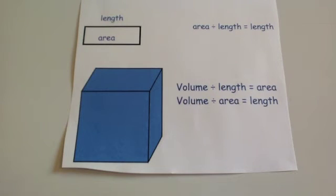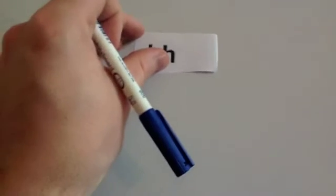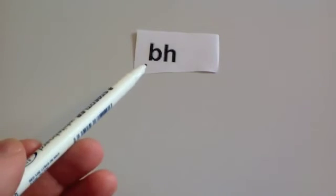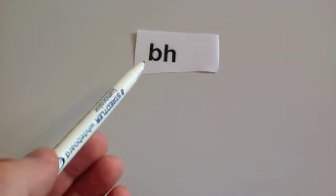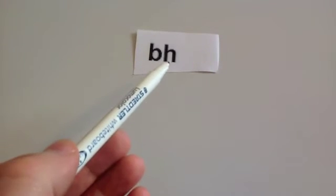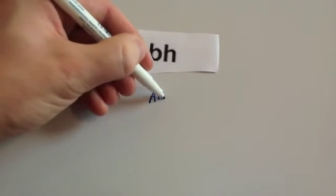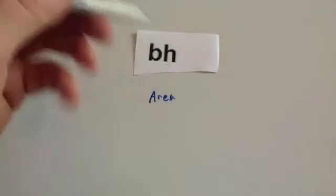Let's have a look at some formulas now and see if they are lengths, areas, volumes, or neither. Starting with BH: B is a length and H is a length, so it's going to be a length times a length. A length times a length is an area. So BH is an area.